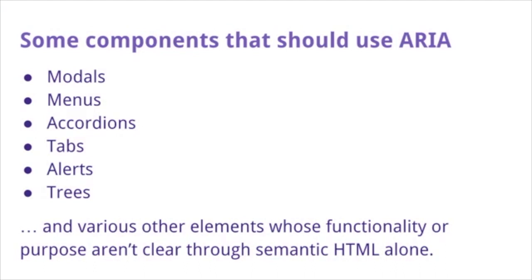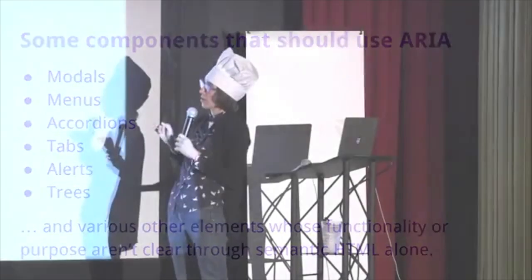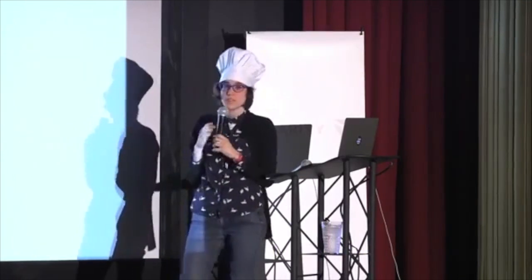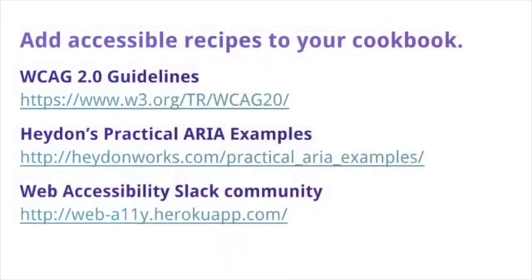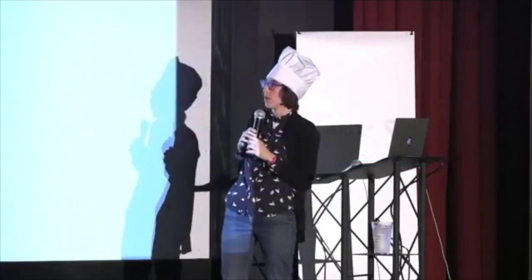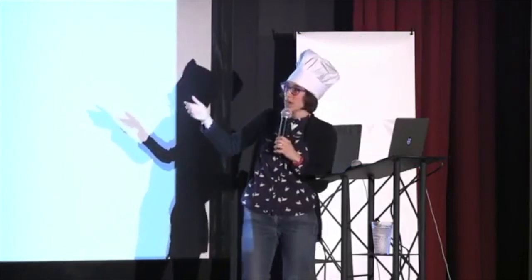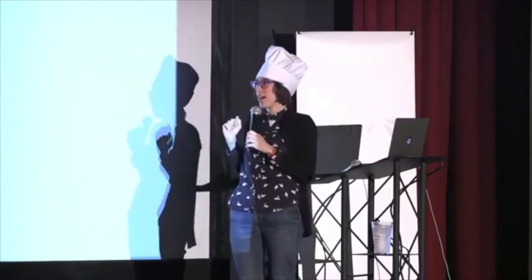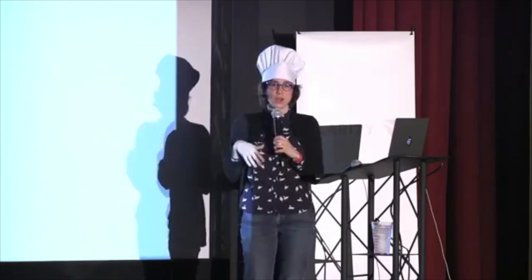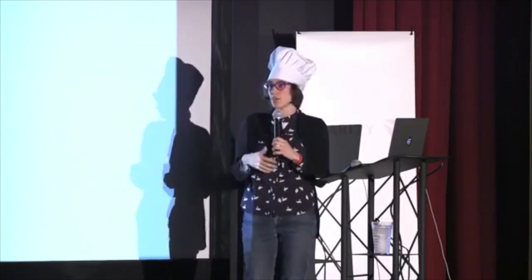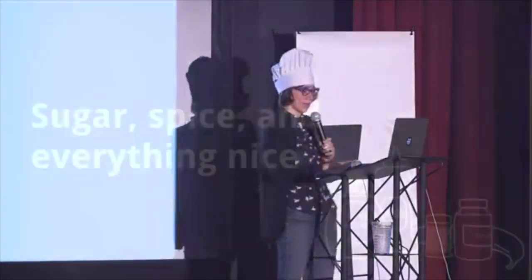I've only scratched the surface of accessible web development, so here are some resources: the WCAG 2.0 guidelines are the accessibility standards most websites target. Heydon Pickering has created practical ARIA examples — small code snippets for accessible accordions, tab sets, and more with minimal code. And there's a web accessibility Slack community at web-a11y.slack — very welcoming to newcomers where we chat about best practices.